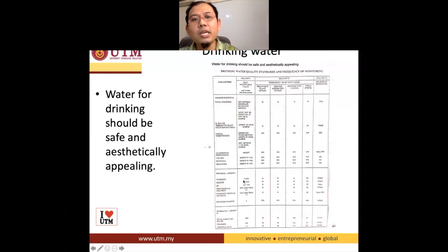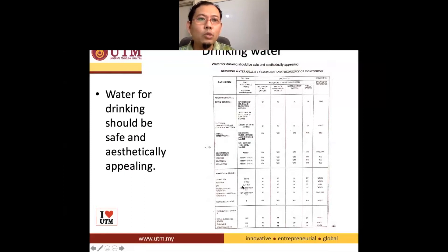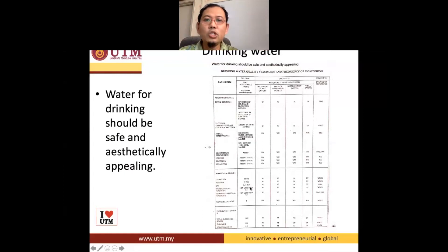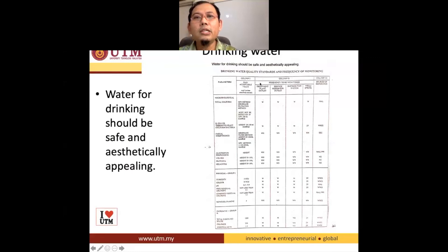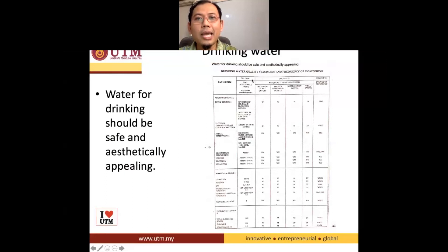NTU is the unit of turbidity, and it has to be 5 and below. What about the pH? The pH for drinking water needs to be between 6.5 to 9 — it should not go below that and it shouldn't be too alkaline. The third component in the drinking water guidelines is the frequency of monitoring. W means weekly, so for instance the BDT needs to be checked at least weekly at the treatment plant.